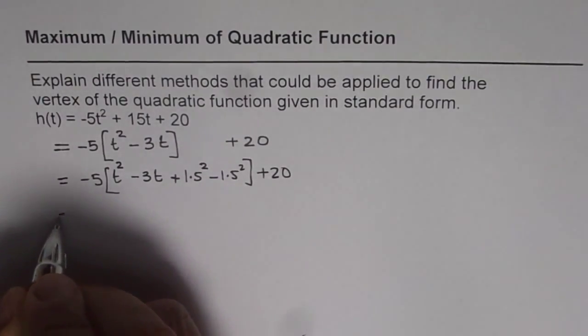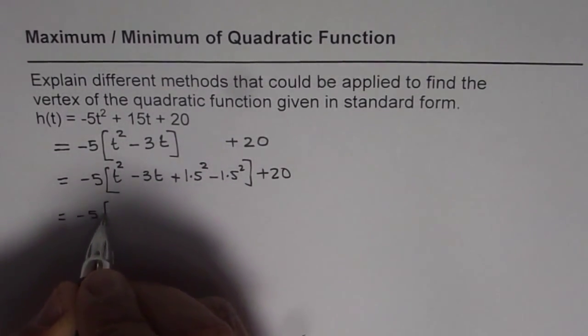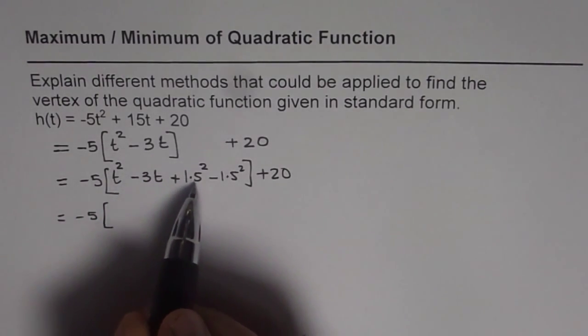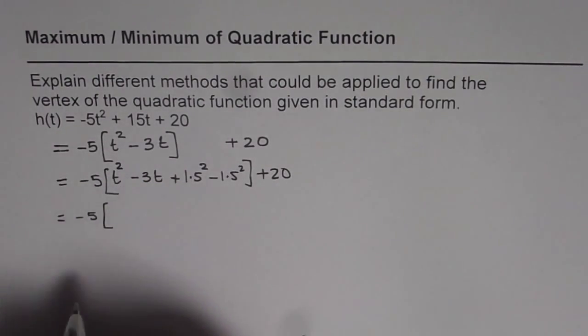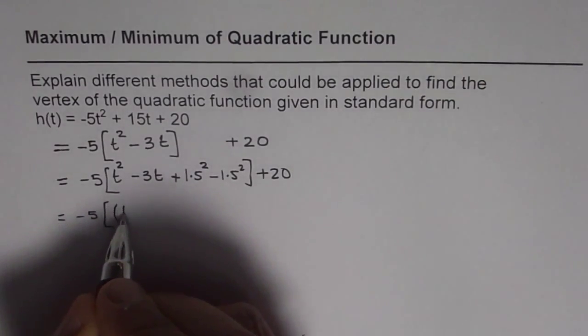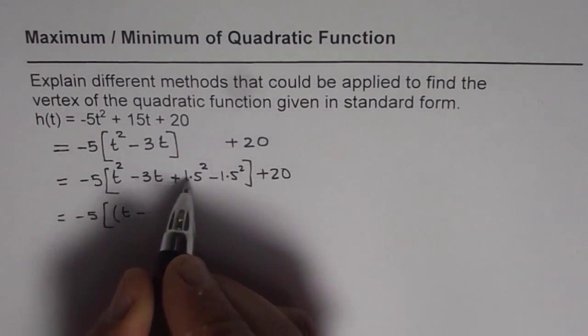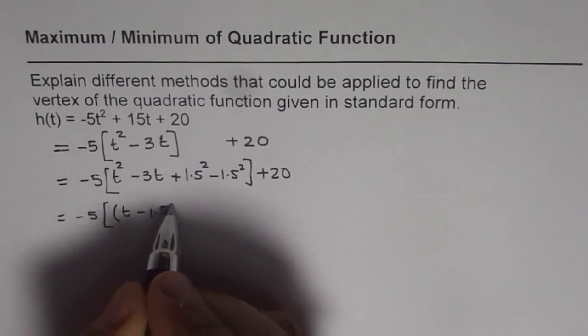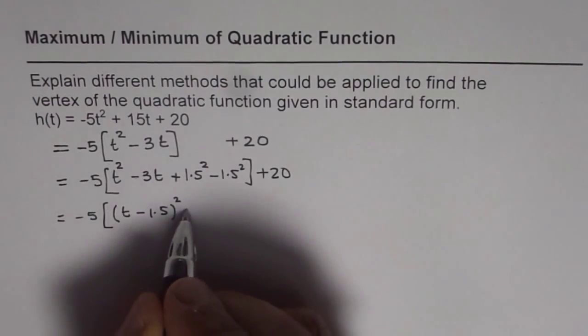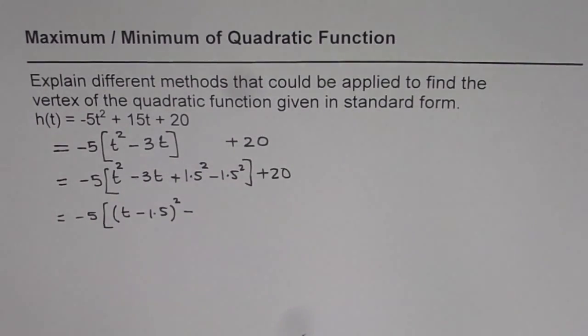As you can see, the first three terms, t² - 3t + 1.5² forms a perfect square. And that could be written as (t - 1.5)² - 1.5².